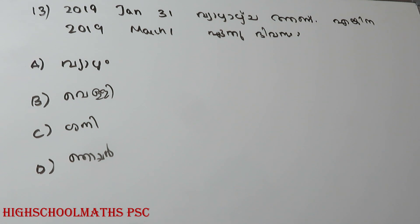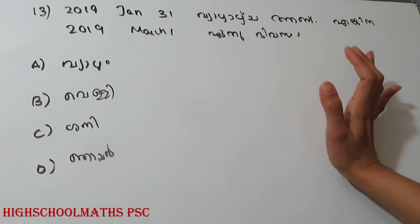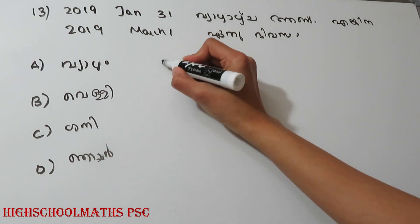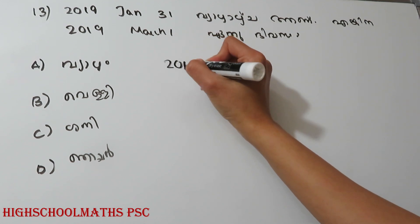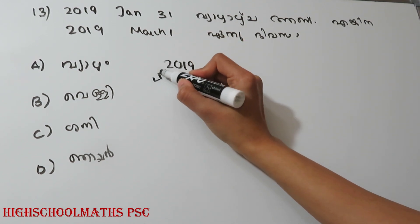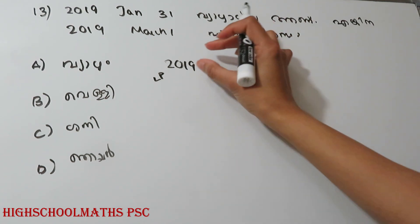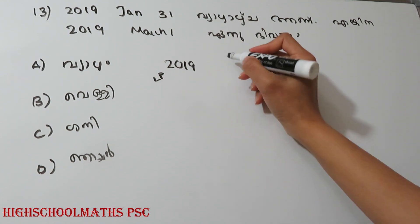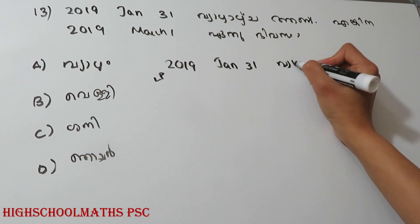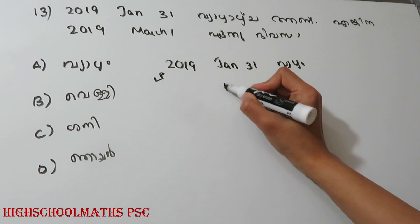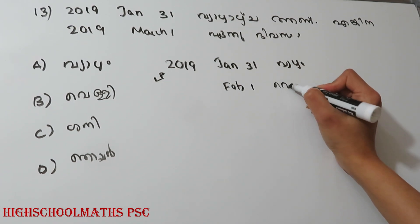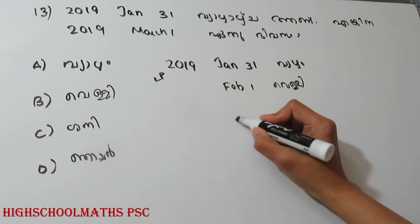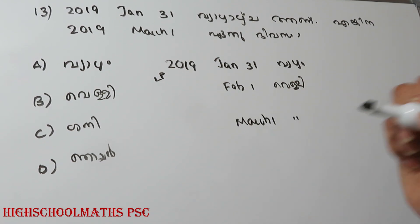Question 13: If 31st January 2019 is Thursday, then what day will 1st March 2019 be? January has 31 days, February 2019 has 28 days. Counting from January 31st through February: the answer is option B — Friday.